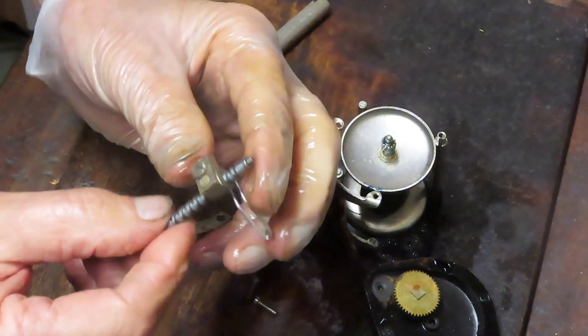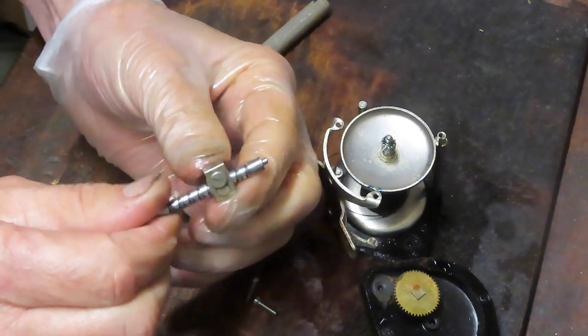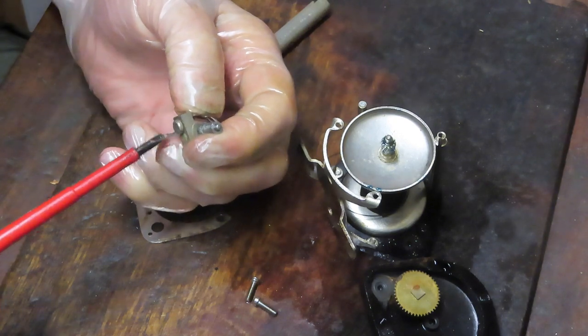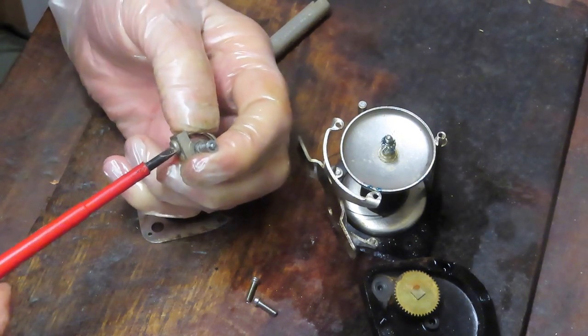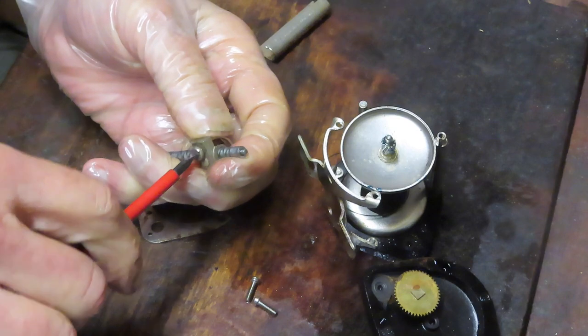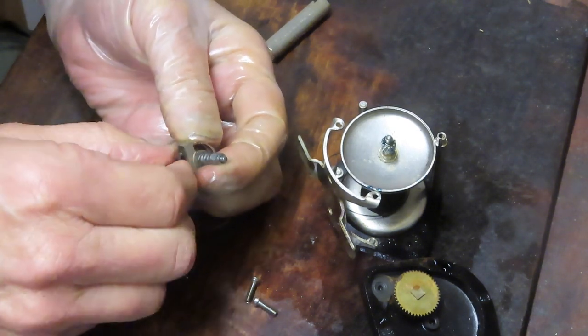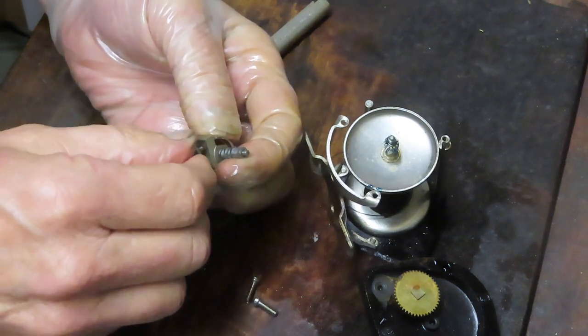And then here's your line guide piece. You want to take that screw off if you can get it off. If you can't, don't force it. Because if you can't get it off and you try to break a screw off, well you're gone. There are no replacement parts for a reel like this.